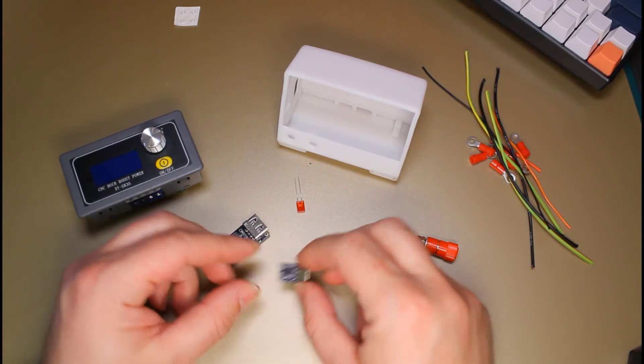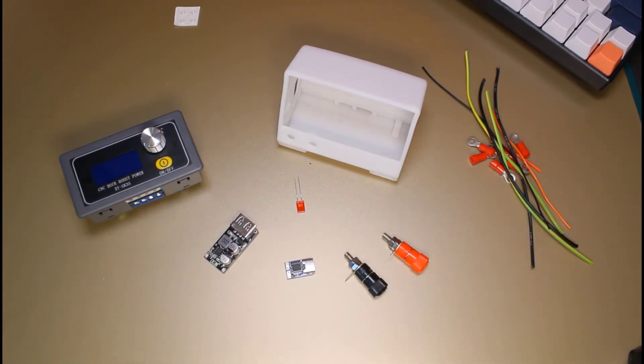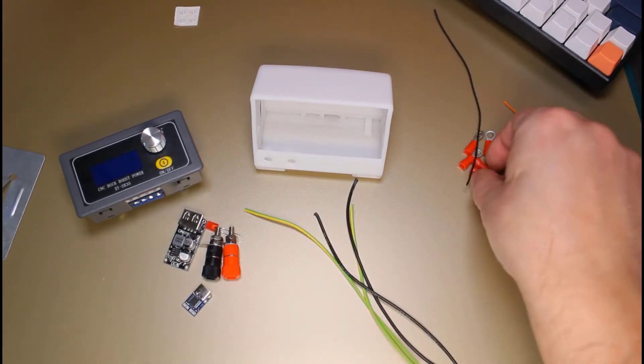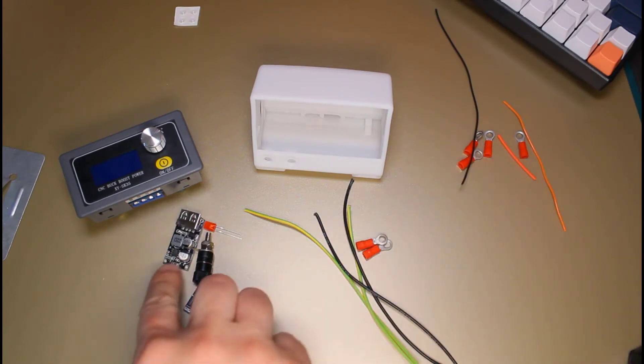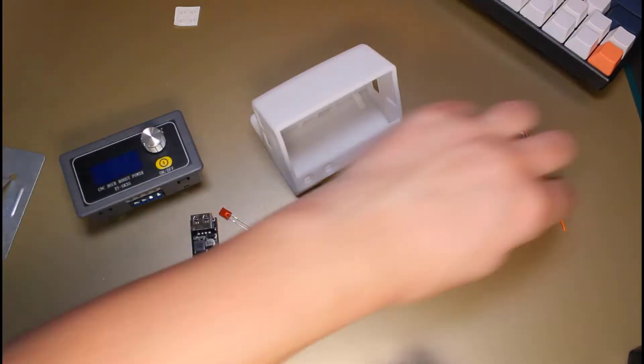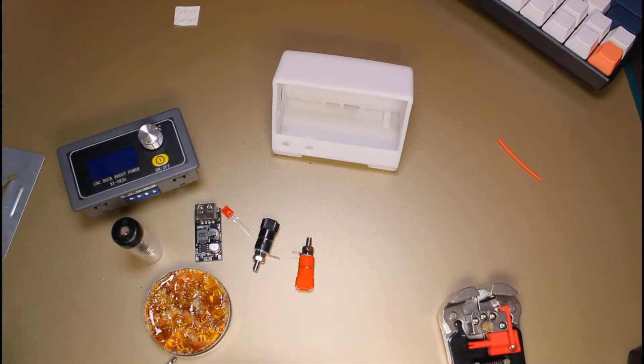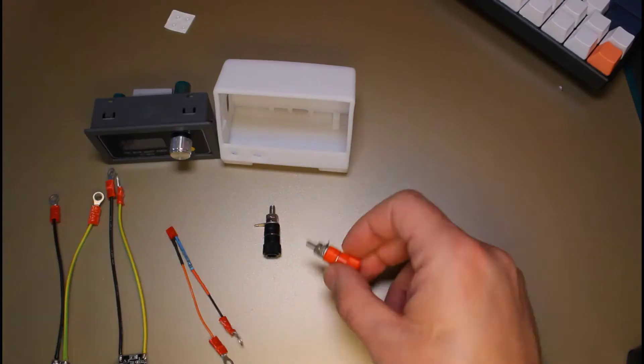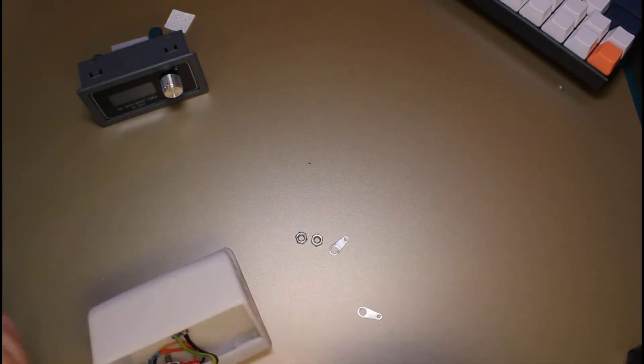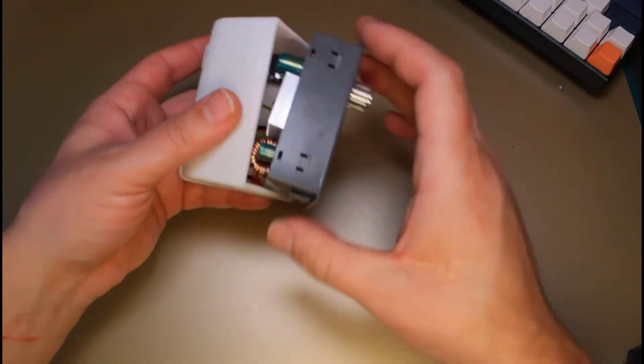Without further ado, let's go to the assembly. This is not the final version, so what I have in mind for now is to use these terminal rings connected to the PCB and then to the banana plugs. We can screw it up. With the wiring, I have made them too short.